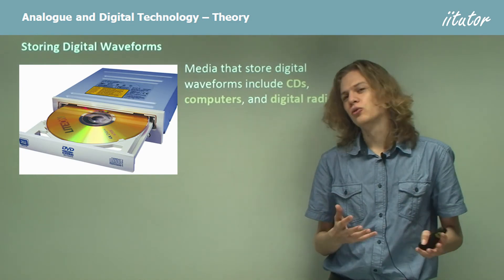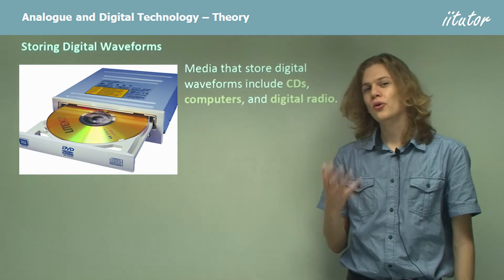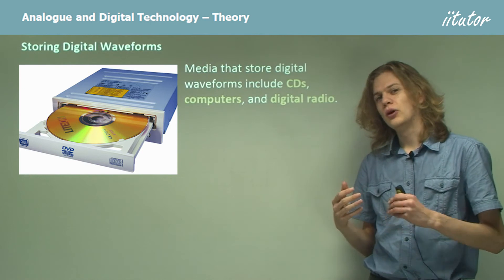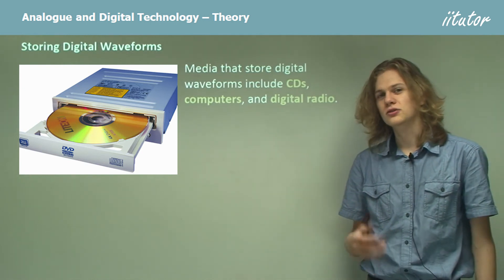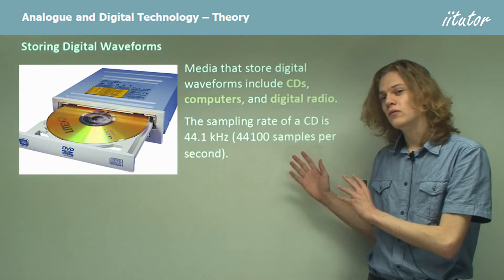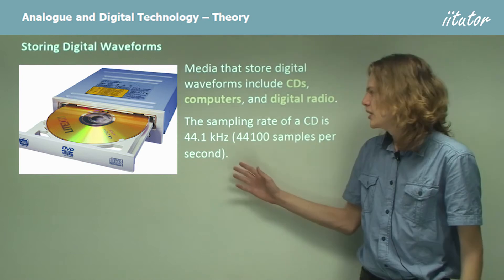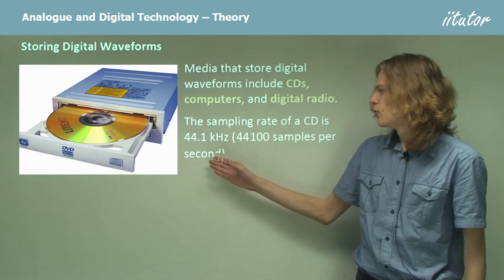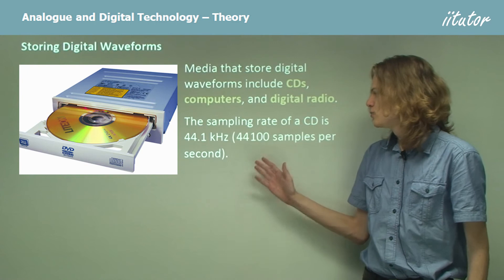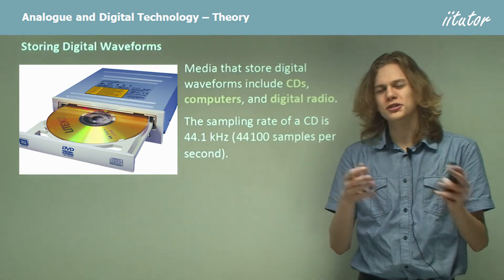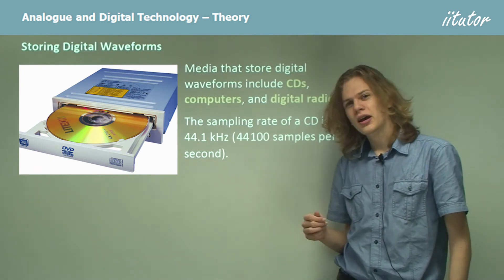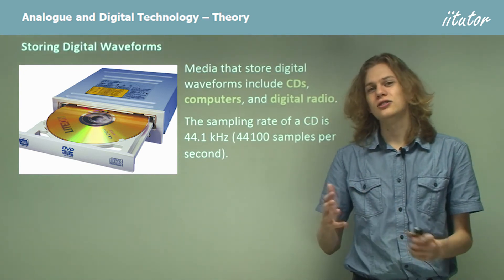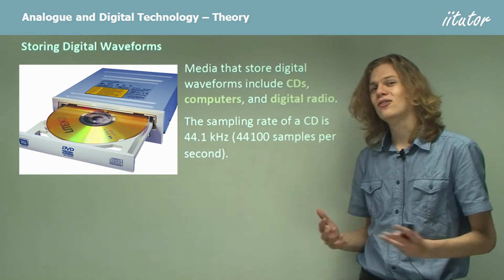Some media that use digital waves to store information include more modern methods like CDs, computers, digital radio, and flash memory USB drives. The sampling rate of a CD music recording is 44.1 kilohertz — remember that hertz means per second, so 44.1 thousand samples per second. With so many samples so close together, it's almost impossible to tell you're listening to a digitized version of an analog recording — it sounds analog to our ears.